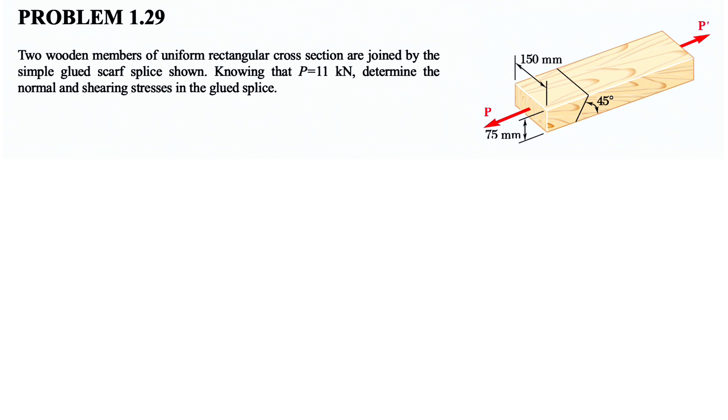We have these two wooden members of uniform rectangular cross-section that are joined by a simple glued scarf splice, as we can see. It's glued in this part. We know that the force P in here is 11 kilonewtons, and we need to determine the normal and shearing stress in the glued splice. So basically, we are looking for the normal stress and shear stress in the glued connection that I highlighted in blue in here.